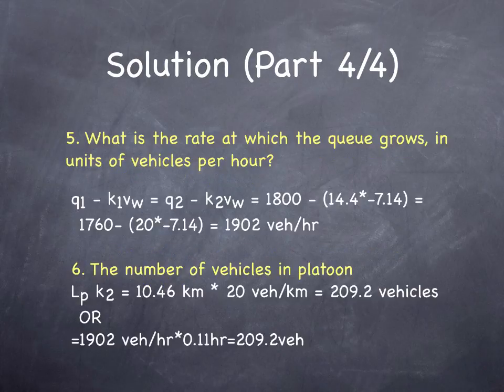What is the rate at which the queue grows in units of vehicles per hour? This is the question we're solving for n1 or n2. First, we're going to solve for the rate at which the queue grows, which is q sub 1 minus k sub 1 times v sub w. Then we'll solve for n, which has to equal n sub 2, which equals q sub 2 minus k sub 2 times v sub w, because the rate at which the queue is growing is the same, both on the upstream of the boundary and on the downstream side of the boundary. k sub 1 times v sub 1 is 14.4 times negative 7.14, which equals 102. So 1800 minus negative 102 is 1902 vehicles per hour.